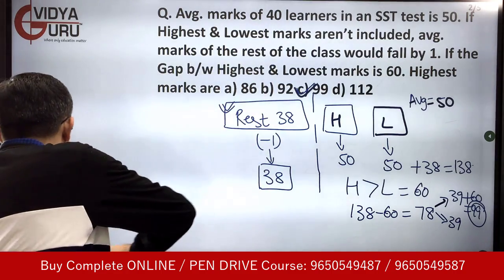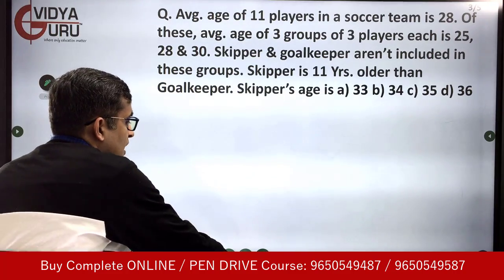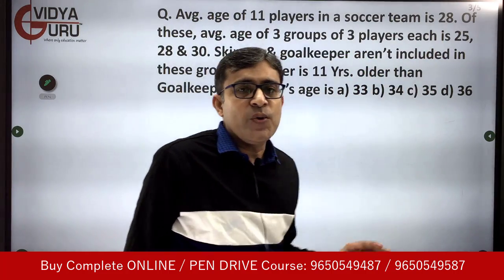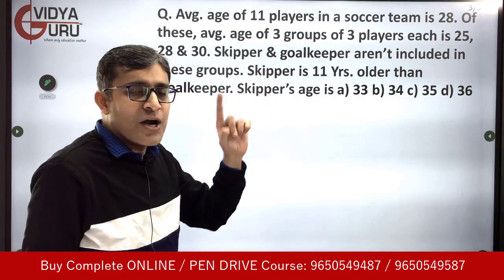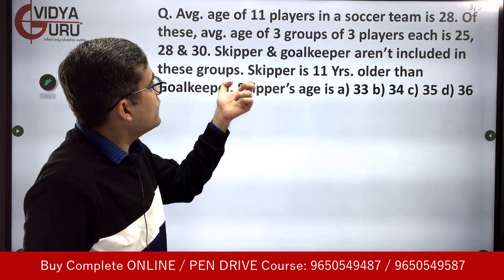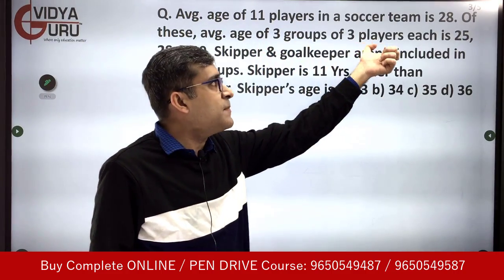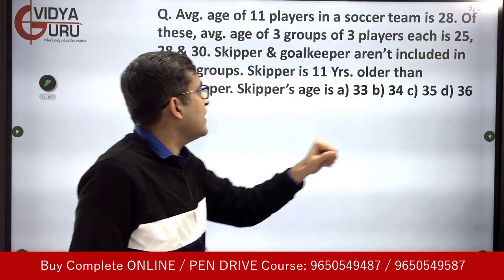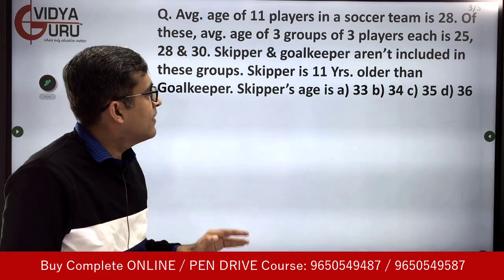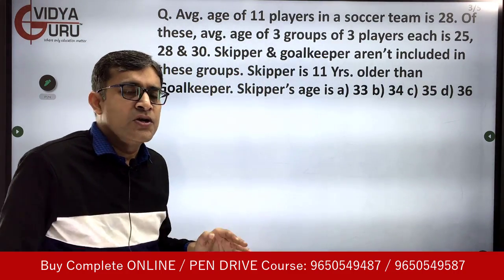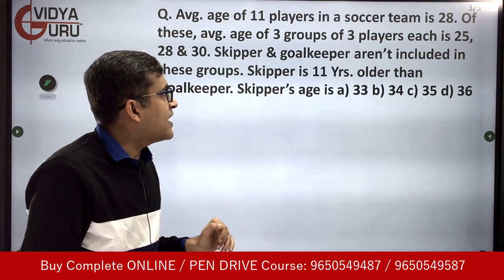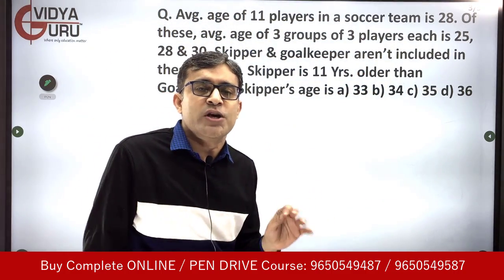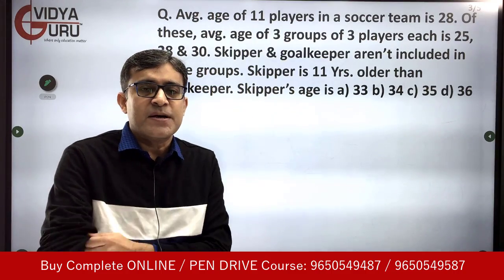Let's move to the next question. Average age of 11 players in a soccer team is 28. The average age of 3 groups of 3 players each is 25, 28, and 30. Skipper and goalkeeper are not included in these groups. Skipper is 11 years older than the goalkeeper. We have to find out the skipper's age.